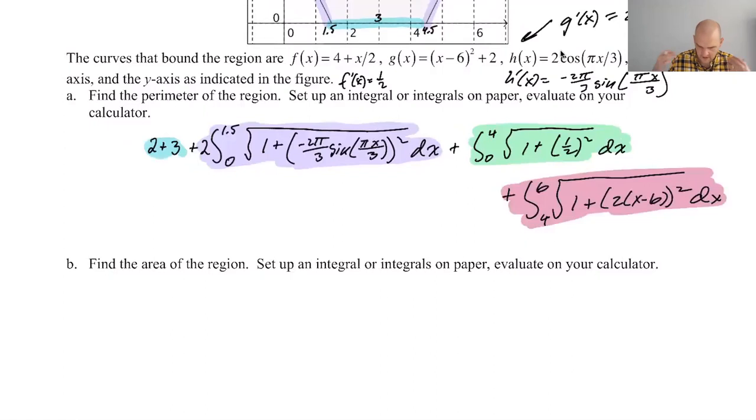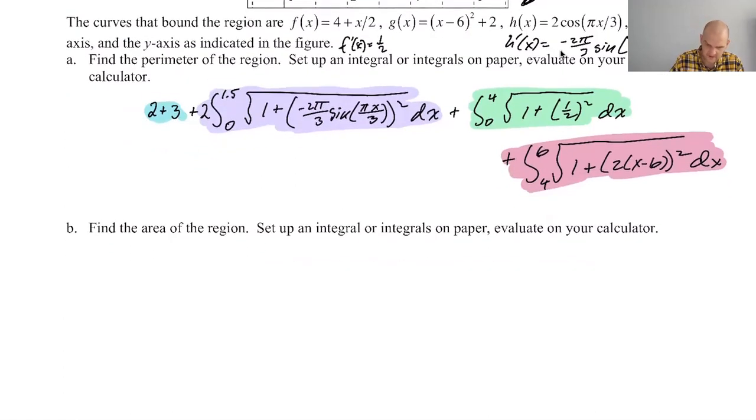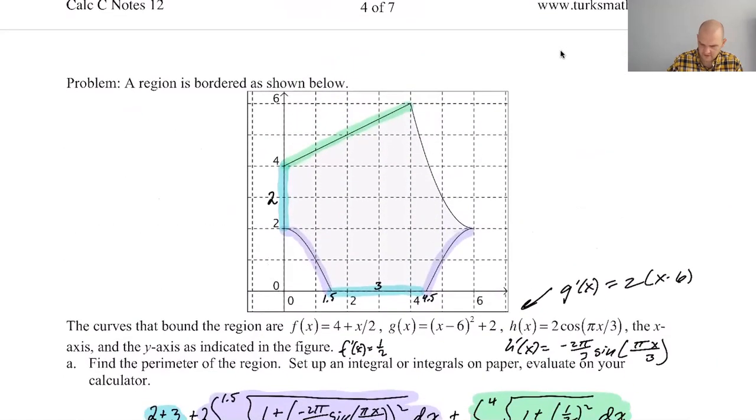Now we're supposed to use a calculator to check that or to get it. Yes. We're supposed to use a calculator to get it. But first I'm going to set up the integrals for the area. I have a plan. I think the easiest thing to do is like this big region and this big region, right? Get both of those. I can do that in two integrals. And then I'll just subtract this region twice because this region and this region are the same. That's my plan.